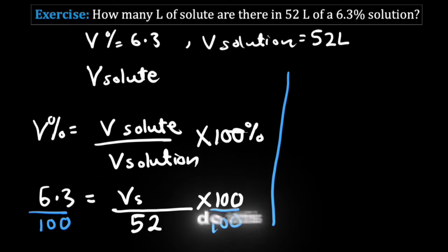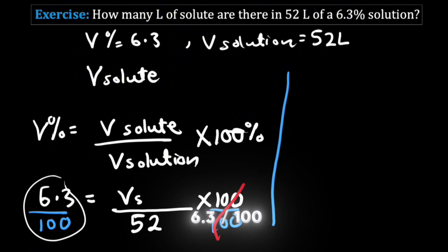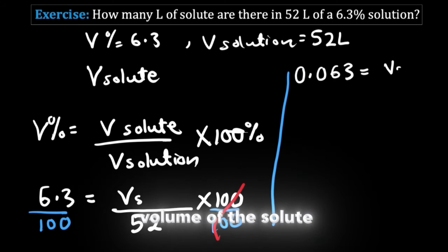Now when you do this, this 100 and 100 would cancel out and we will have 6.3 divided by 100, which is the same as writing 0.063. This will be equal to the volume of the solute divided by 52.